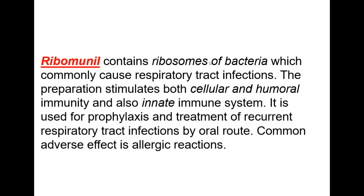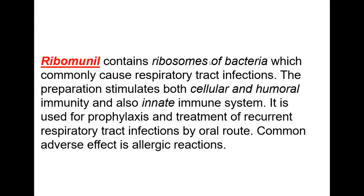Ribomunil contains ribosomes of bacteria that commonly cause respiratory tract infections. It can be started in autumn to form immunity before winter — for example, before the February influenza wave. It stimulates both cellular and humoral immunity and also the innate immune system. It is used for prophylaxis and treatment of recurrent respiratory tract infections by oral route. Allergic reactions are among its adverse effects.